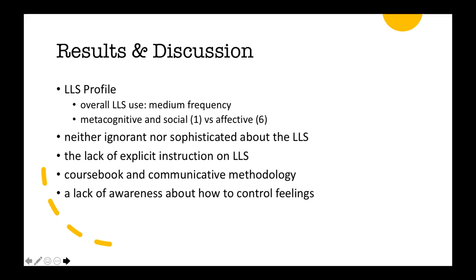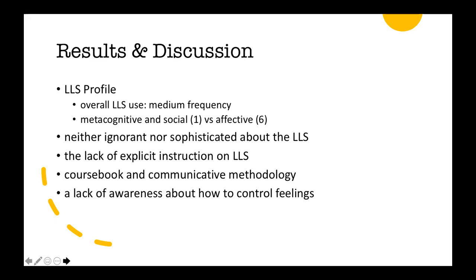The course book and communicative methodology may be other factors behind high social strategy use, since activities such as role plays and debates can increase cooperation and collaboration. Regarding affective strategies, all interviewees expressed how excited and nervous they felt while using the target language, but affective strategy use ranks at the bottom, indicating a lack of awareness about how to control feelings. The findings also show that high achievers employed more strategies compared to low achievers — high achievers are not only active strategy users but also successful at orchestrating their strategies effectively.